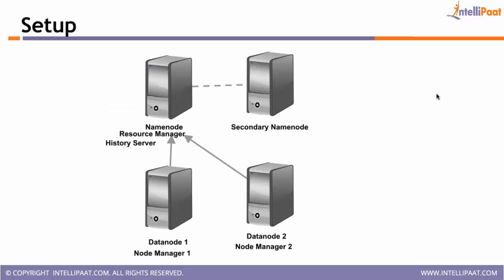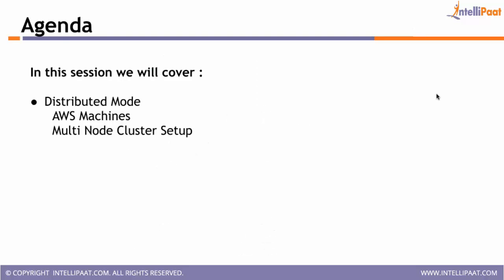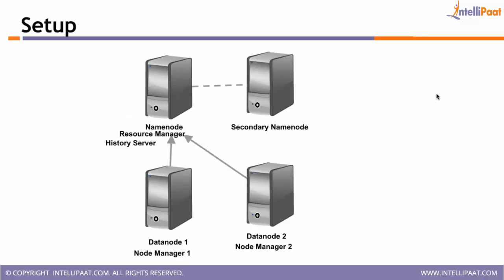The setup will be something like this. We will have four machines — four AWS instances — because we don't have physical machines or servers in our lab. So we will be using virtual machines provided by Amazon. They have 370 hours free per month. So you can all try after this session to create four instances and set up the multi-node cluster. In this class we will understand how to create these AWS machines and how to install Hadoop on them.